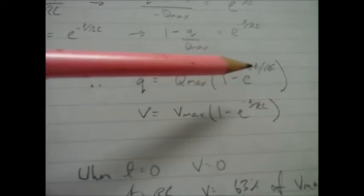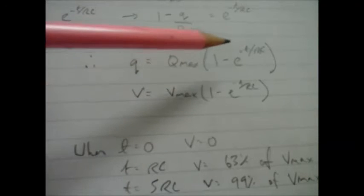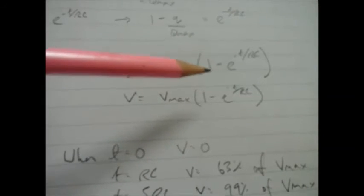Now what if I make T equal to the value of RC? T equals RC. Well then this would be 1, and E to the minus 1 is about 0.37. 1 minus 0.37 gives me 0.63. So when T equals RC, what we call the time constant for the system, the voltage will be 63% of the maximum voltage.